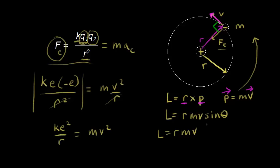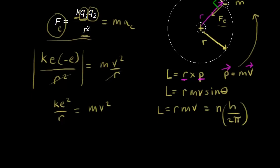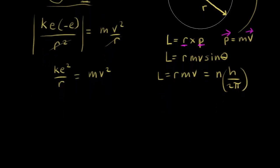Niels Bohr thought that this angular momentum should be quantized. What he did was set this angular momentum equal to some integer — like one, two, or three — times H, which is Planck's constant, divided by two pi. This is what Bohr came up with, and he took this and solved for the velocity.